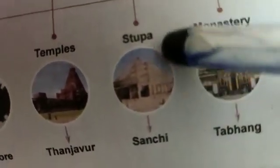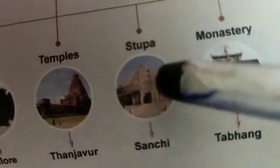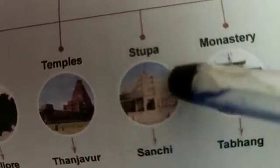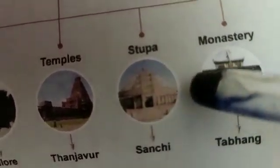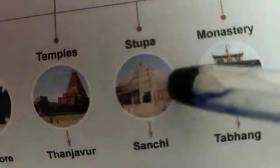Sanchi Stupa was built by Bouddhar — that is, it is a Buddhist structure, a stupa built by followers of Buddha.